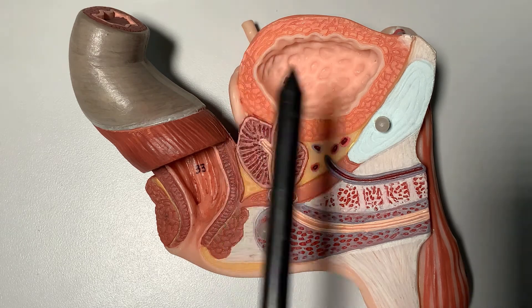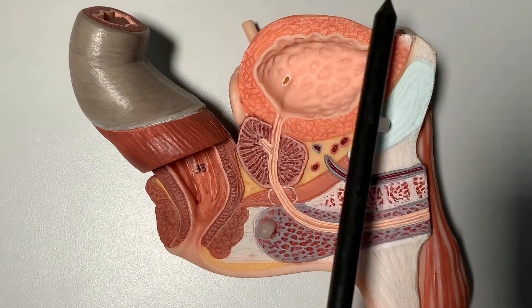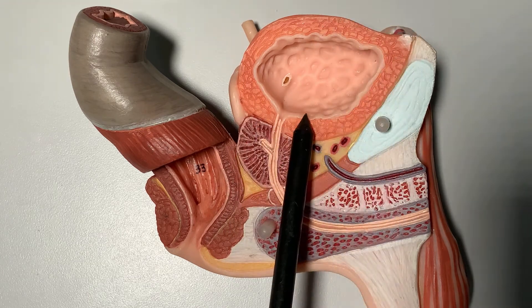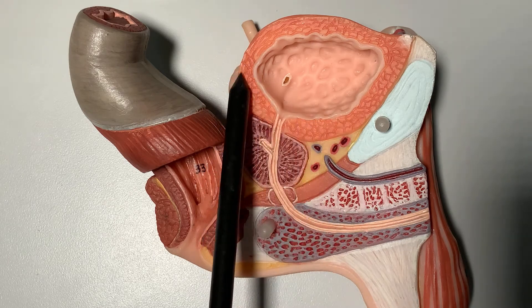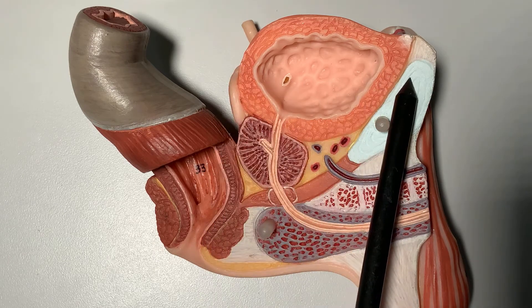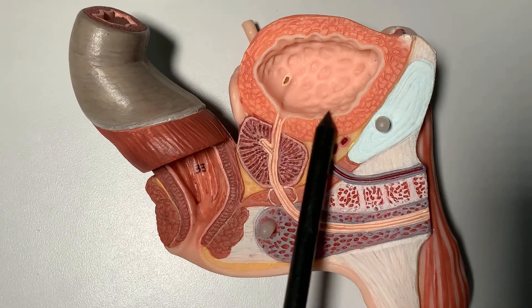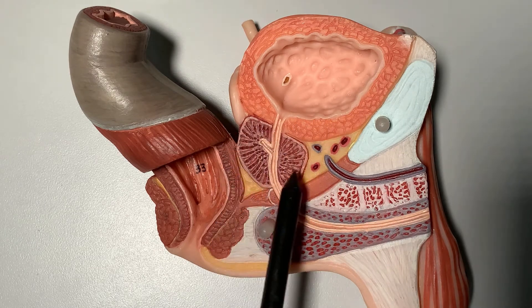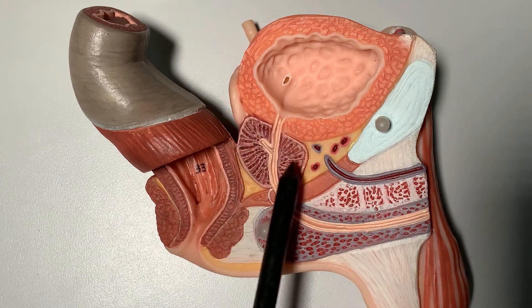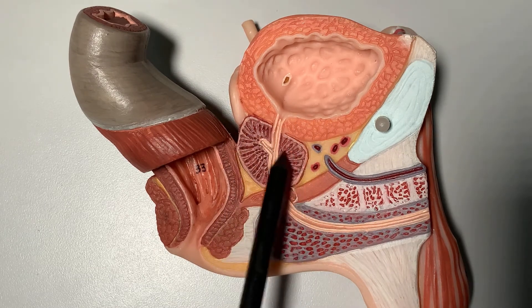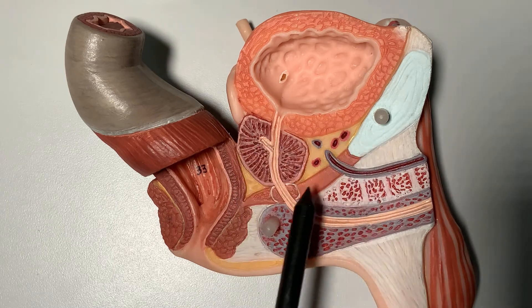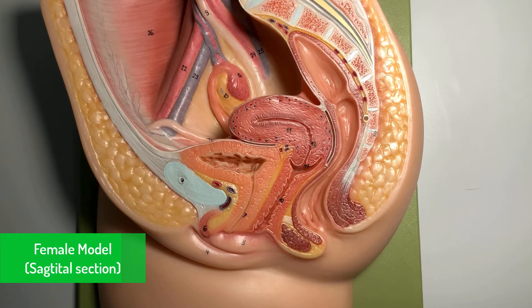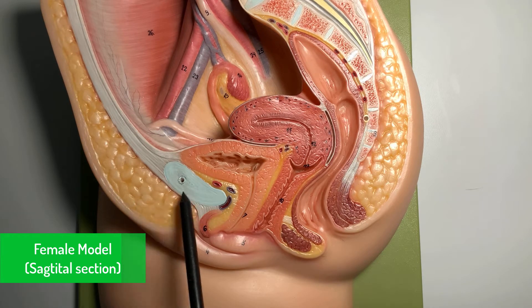We have a similar pattern on the other side. We are seeing this in a sagittal section, so you can see the location behind and in front, and how the urinary bladder is sitting on top of the prostate gland.